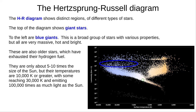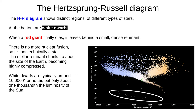To the top left are blue giants. There are several types of blue giants with various properties, but all are very massive, hot and bright. They are also old stars having exhausted their hydrogen fuel. Blue giants are only about 5 to 10 times the size of the Sun but their temperatures are 10,000 Kelvin or more — some reach 30,000 Kelvin and emit 100,000 times as much light as the Sun. At the bottom are white dwarfs — the small, dense remnants left behind when a red giant finally dies. Nuclear fusion stops, so by some definitions this is technically not a star. The stellar remnant shrinks to about the size of Earth, becoming highly compressed. White dwarfs are typically around 10,000 Kelvin or hotter but only about one-thousandth the luminosity of our Sun, and none are bright enough to be seen from Earth without telescopes.